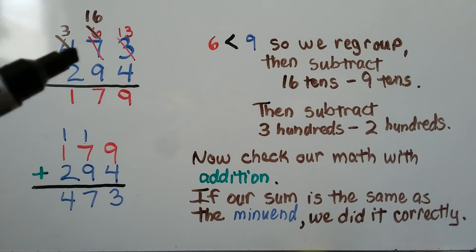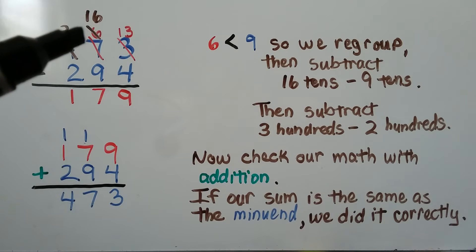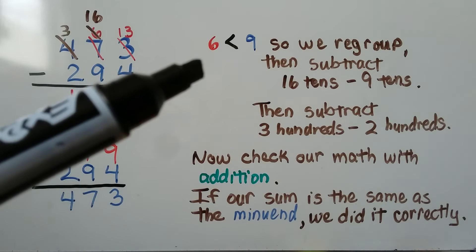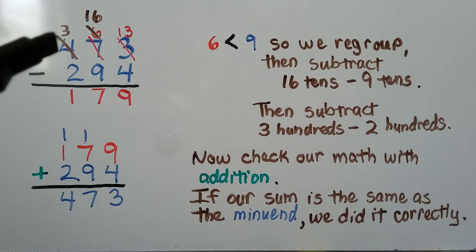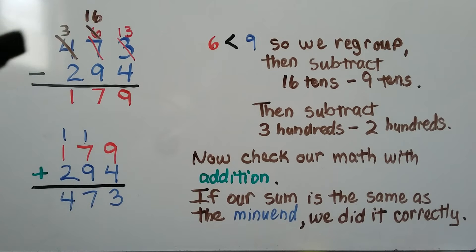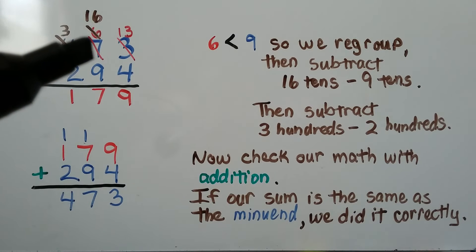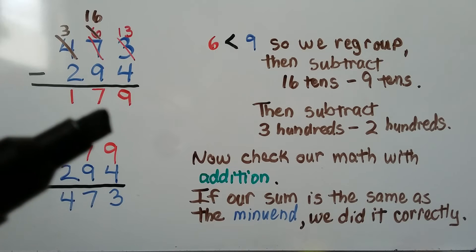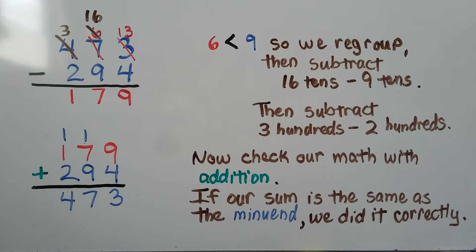Now we look at the tens place. We had 6 tens and needed to take away 9 tens. 6 is less than 9, so we regroup from the hundreds place. We give 100 as 10 tens to the tens place. Now instead of 6 tens, we have 16 tens. We can take away 9 tens and have 7 tens left. Then we do 300 minus 200, which gives us 100.